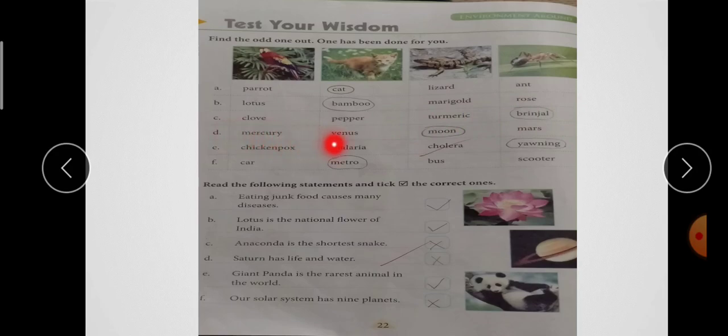D है - Mercury, Venus, Moon, Mars. Moon जो है, वो सबसे अलग है क्यों? क्योंकि ये satellite का name है. और बाकी जो three हैं, ये क्या है? Planets के name. E है - Chicken Pox, Malaria, Cholera, Yawning. ये तीन जो है, diseases के name हैं. और Yawning जो है, it is not a disease.